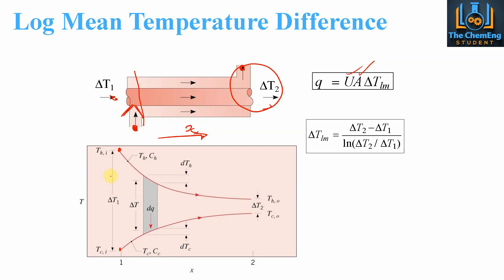Remember that the driving force for heat transfer is the temperature difference. At the beginning of the system — even up to halfway — we have a high driving force for heat transfer, which is a favourable condition. However, when the values become very close, the rate of heat transfer is considerably smaller because the temperature difference is very small. A small delta T gives a small Q, whereas a very high delta T gives a very high Q. So the greater the temperature difference between the streams, the better the heat transfer rate.